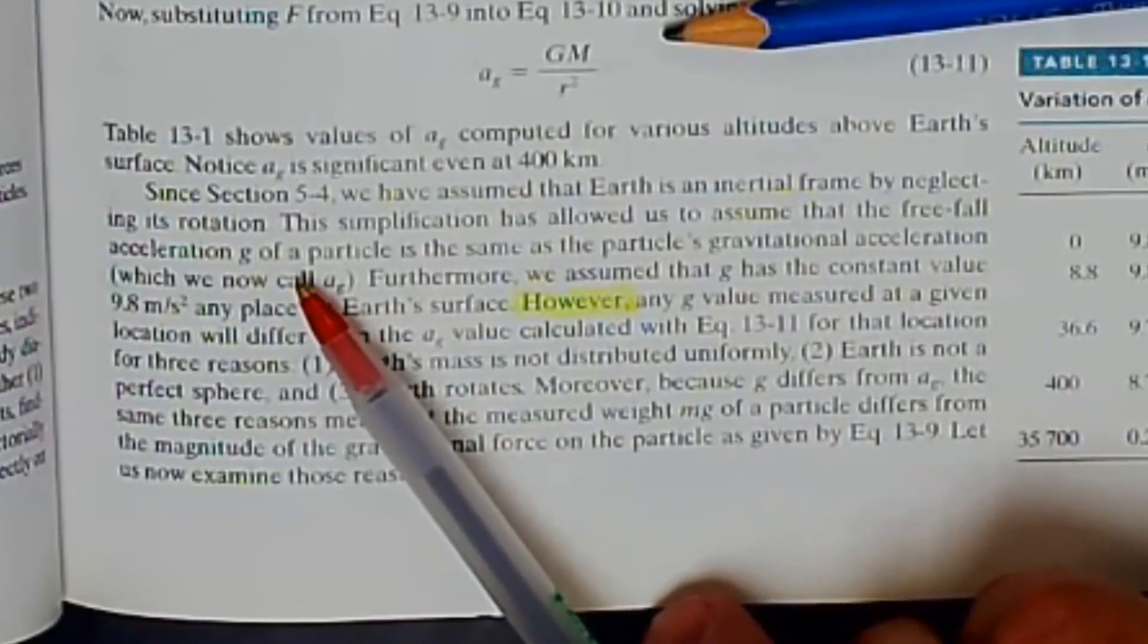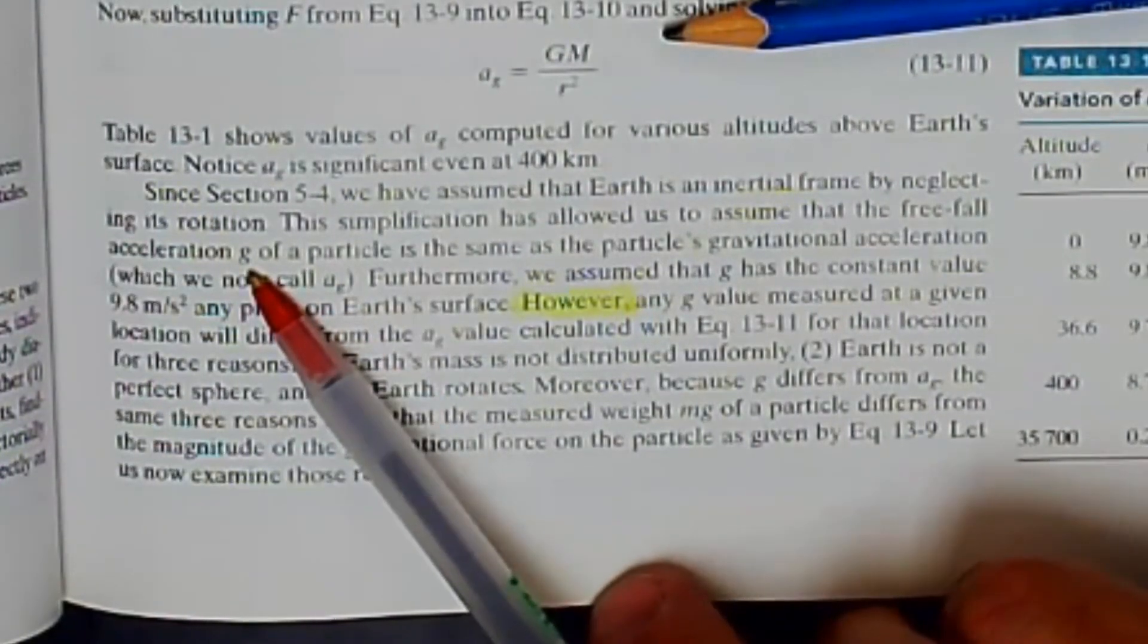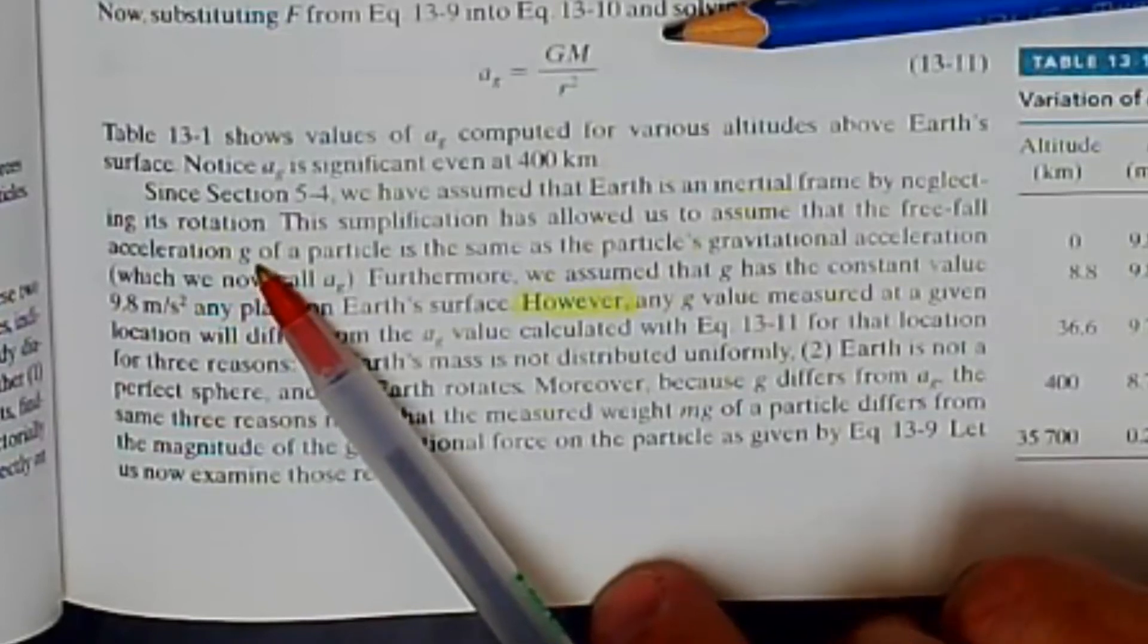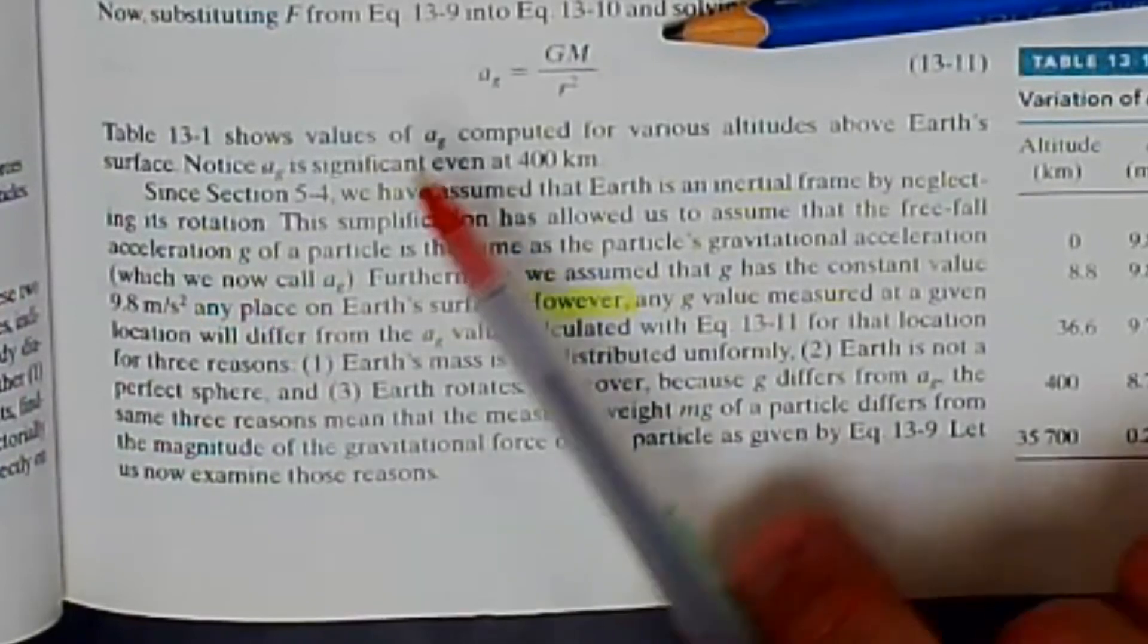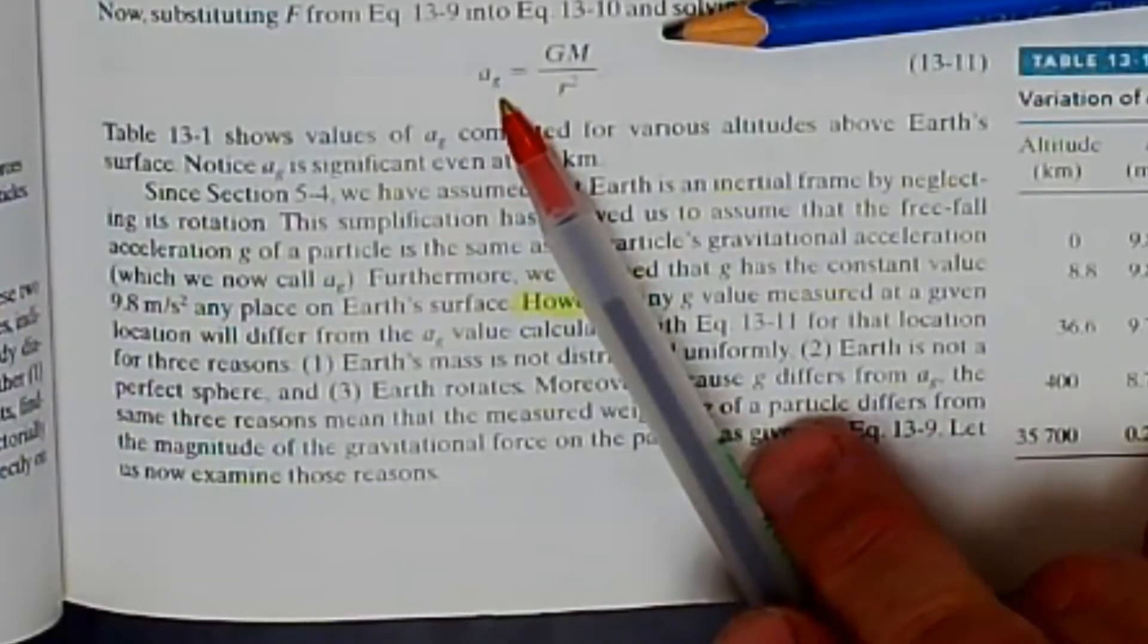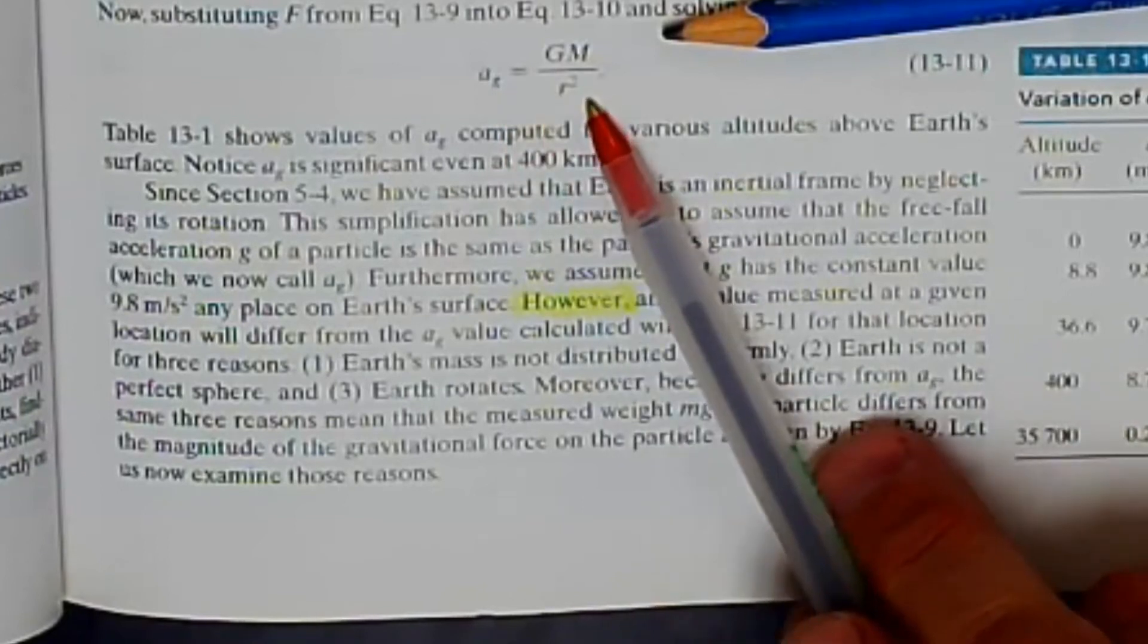Let's make sure we understand the notations here. When we talk about g, that's going to be the actual acceleration that we measure of a falling object at the surface of planet Earth. And a sub g will be the acceleration that is calculated with Newton's law of gravitation.